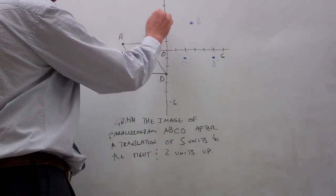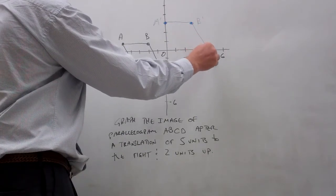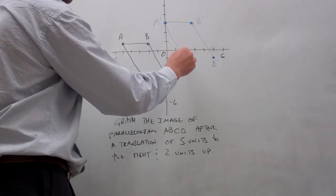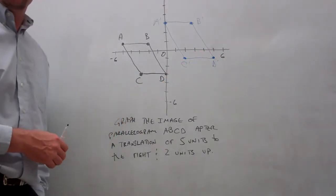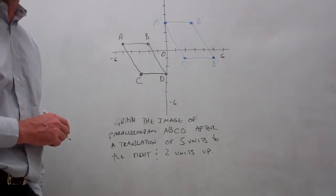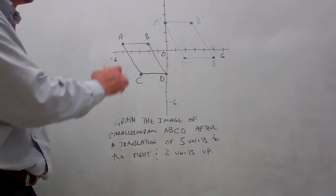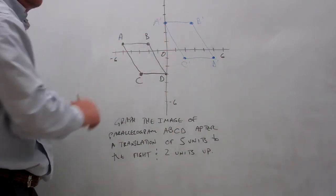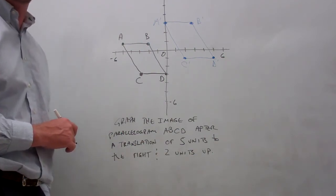We'll call that point A prime. If we connect our four points, you'll notice that our translation has the exact same shape, size, and orientation. That's one of the key components of a translation - the image is congruent, maintaining its size, shape, and orientation.